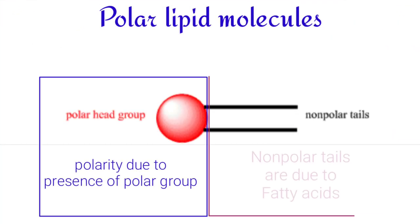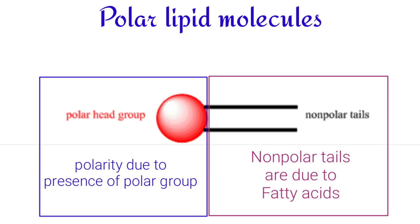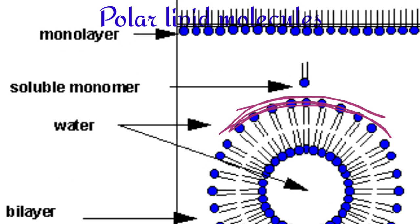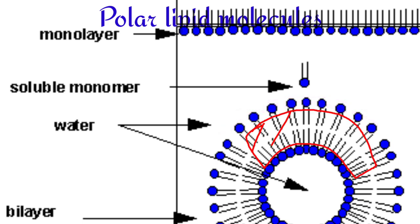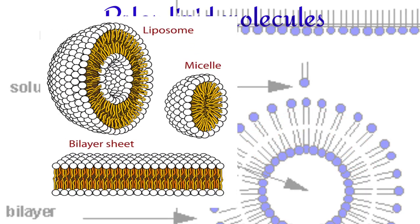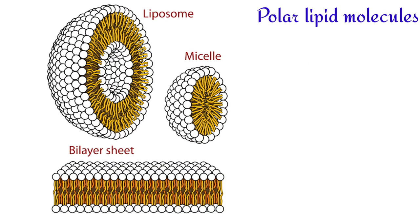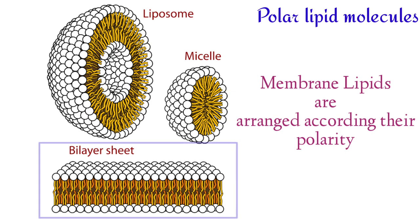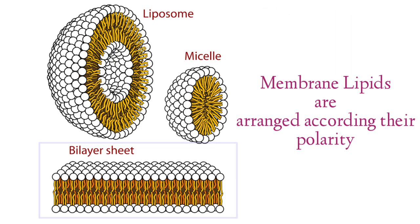Based on these polar lipid molecules, they are arranged in the membrane such that their polar side faces the polar solvent — water — while the non-polar fatty acid side faces inward. This arrangement produces different structures such as micelle-like and liposome-like structures, which illustrate how membrane lipid molecules organize themselves. In the cell membrane, this results in the lipid bilayer — where polar heads face outside and the non-polar tails face inside — which we will discuss in detail in our upcoming lecture.